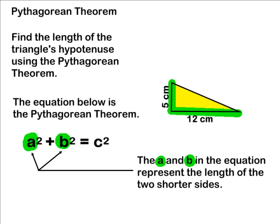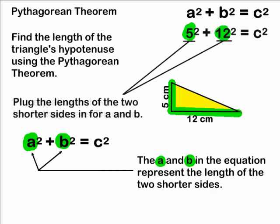When trying to calculate the length of any triangle's hypotenuse, the first step is to substitute the length of the two shorter sides in for the a and b in our equation.